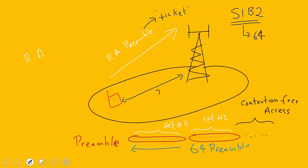There are 64 preambles total, divided into different sets. The subset is used to select the preamble sequence based on how much data the device would like to send - the device selects any preamble from any subset depending on the amount of data it has to send. The selection also depends on power: if the UE has to send a lot of data in uplink and use more power, it will use a preamble from one of the sets. Based on which preamble is used, the eNodeB will know how many uplink resources to allocate for the UE to transmit data.